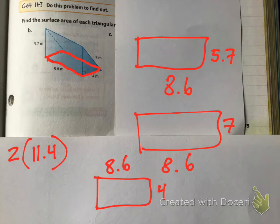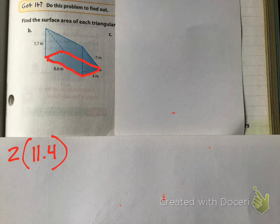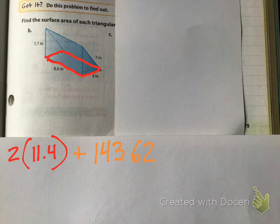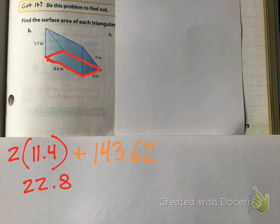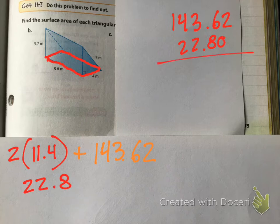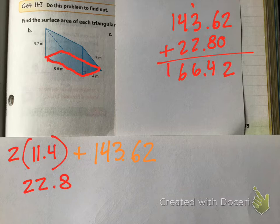But we are not done yet, because that is just the area of the rectangles. We still have to add the area of the triangles. So 143.62 plus 2 times 11.4 — which is 22.8 — we add those together. 143.62 plus 22.8 gives us 166.42 square units.